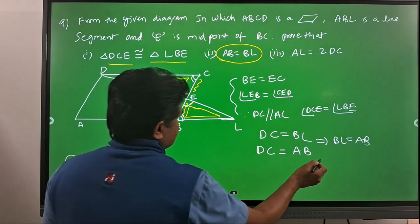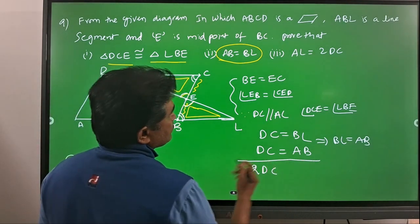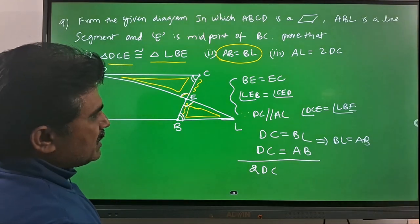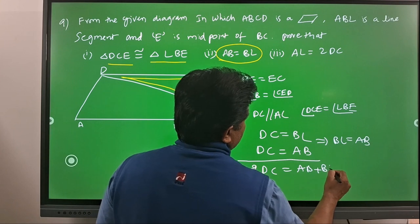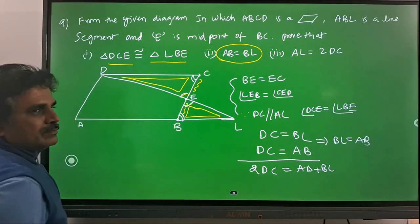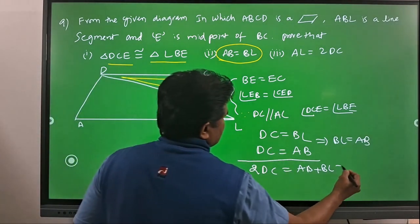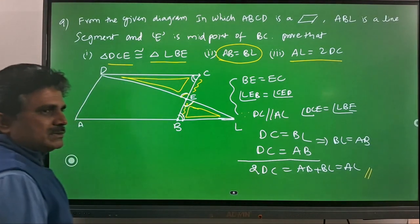And now add these two expressions. We have 2DC which is equal to AB plus BL. What is the total? AL. That is what we need to prove. AL is equal to 2DC.